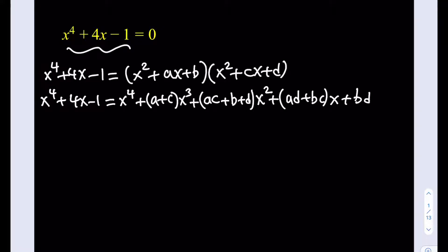These two polynomials are equal for every x, so we can determine the coefficients. Since there's no x cubed term, a plus c equals 0. Since there's no x squared term, ac plus b plus d equals 0. The coefficient of x is 4, so ad plus bc equals 4. And the constant gives bd equals negative 1. We're looking for values of a, b, c, d — we don't know yet if they're integers.